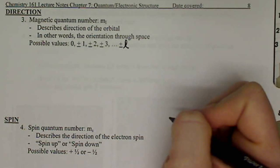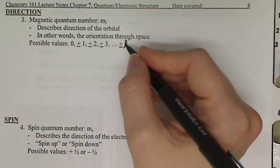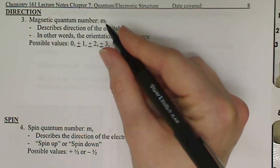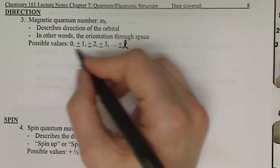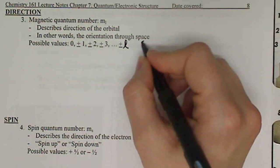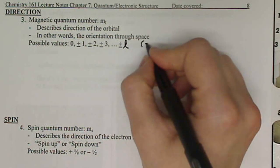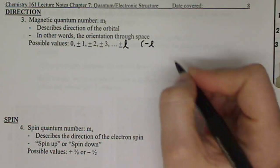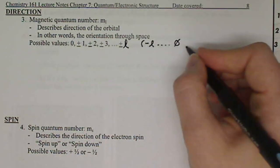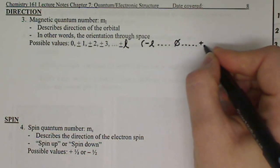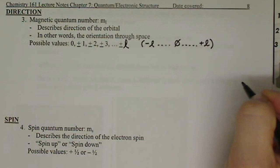So n, our quantum number, dictates what l could be. L dictates what m sub l can be. Another way to think about this is, rather than listing it out, you could say this is essentially negative l in integers up to and including zero, and then integers up to positive l.